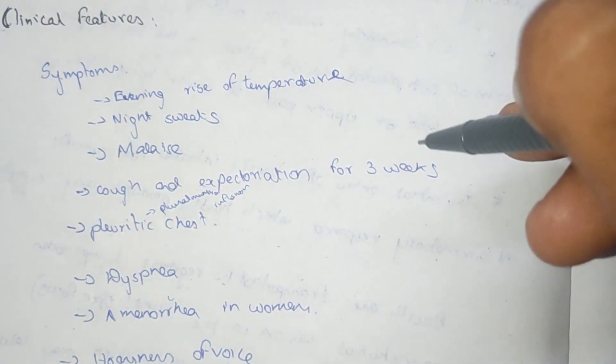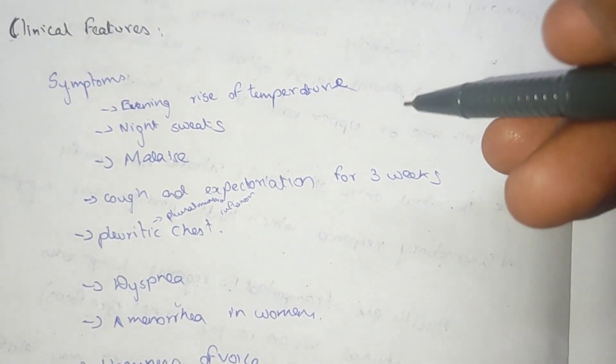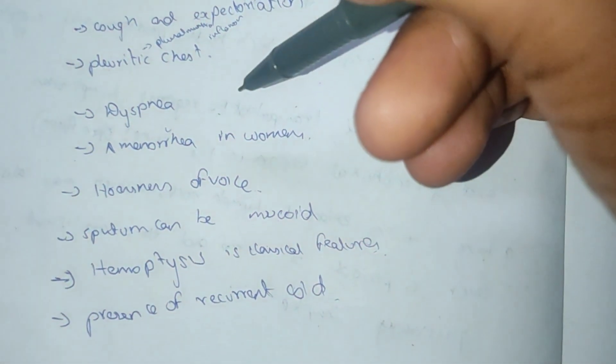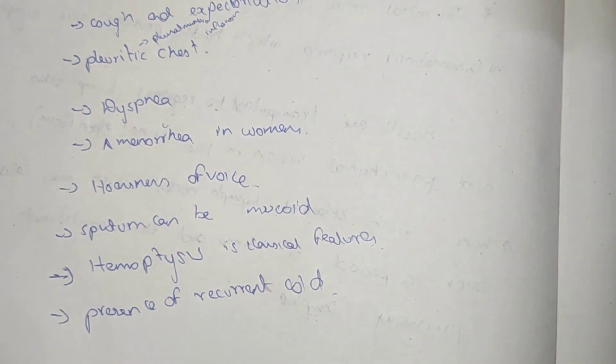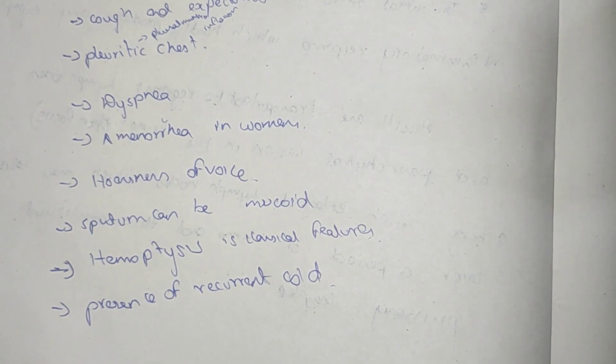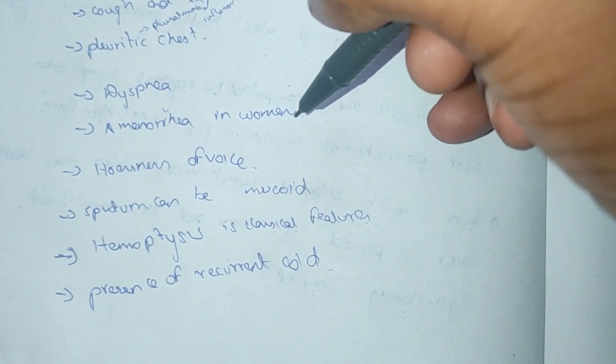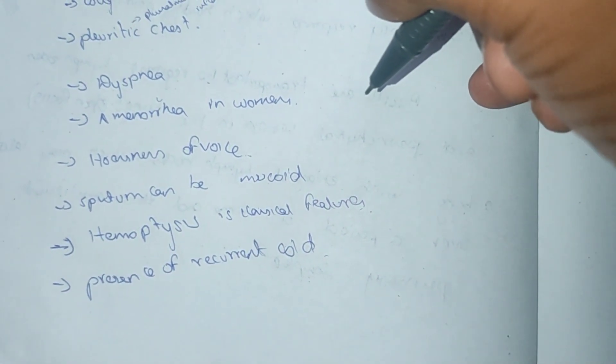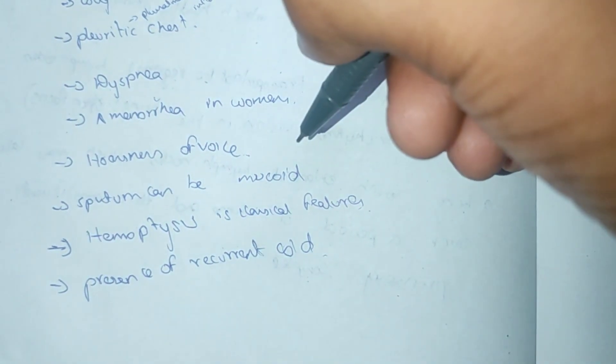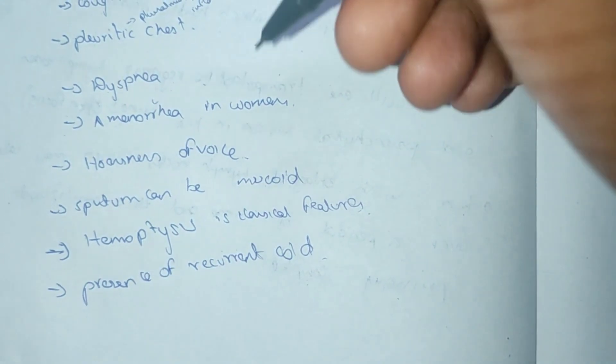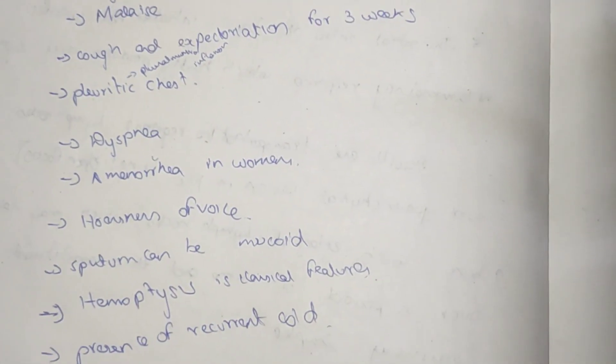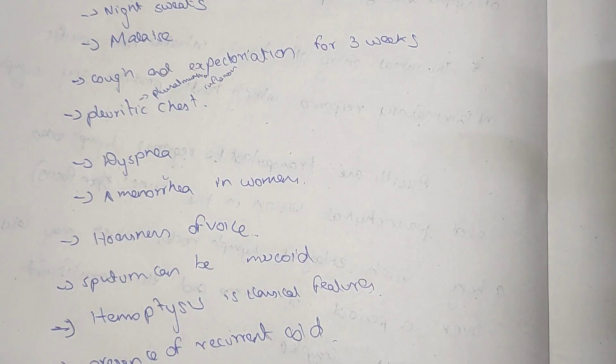Symptoms of tuberculosis: evening rise of temperature, night sweats, malaise, cough and expectoration for three weeks, moist cough, pleuritic chest pain, dyspnea. Sputum can be mucoid, hemoptysis is a classical feature, presence of recurrent cold. These are the symptoms for tuberculosis.